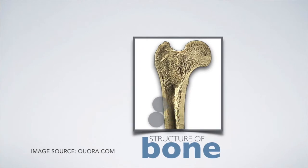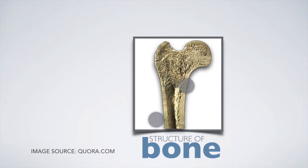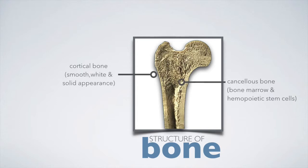When we look at the structure of bone closely, we can see that it is hollow in the middle but has a tough surrounding matrix. The hard outer layer of the bone is called cortical bone and the inner spongy layer is cancellous bone. The outer cortical bone is responsible for the smooth, wide and solid appearance, while the inner layer is responsible for bone marrow and stem cell generation.